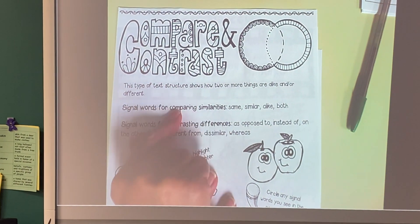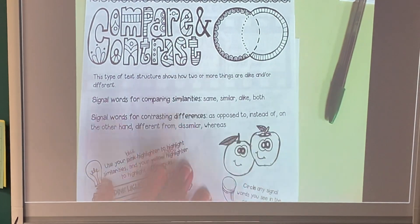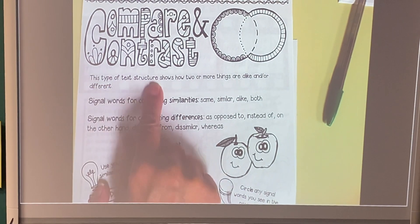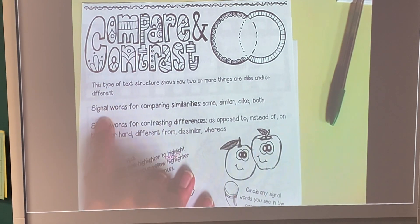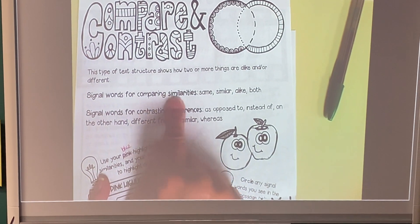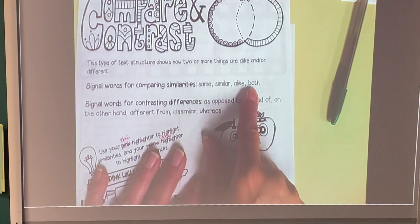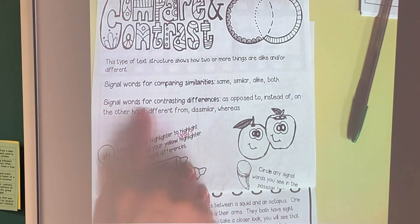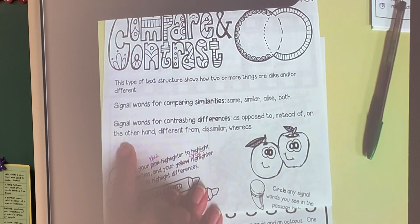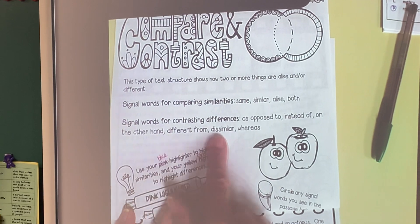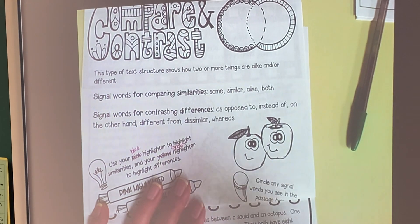Today we're going to do compare and contrast. We use a Venn diagram for compare and contrast. This type of text structure shows how two or more things are alike or different. Signal words for comparing similar things are: same, similar, alike, and both. Signal words for contrasting differences are: as opposed to, instead of, on the other hand, different, dissimilar, and whereas. We'll see those as we do different articles, and we'll work on other articles next week.